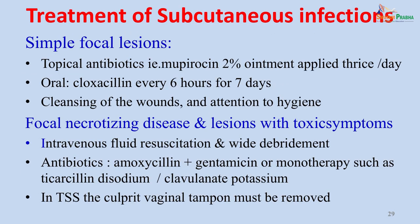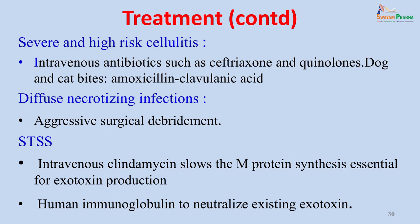The patient came into the category of simple focal lesions. Topical antibiotic — mupirocin 2% ointment — was applied thrice daily; oral cloxacillin every 6 hours was given for 7 days; and wound cleaning with attention to hygiene was addressed. For focal necrotizing disease or lesions with toxic symptoms, treatment would include intravenous fluid resuscitation, combination antibiotics such as amoxicillin and gentamicin or monotherapy with ticarcillin-clavulanic acid, and debridement of the necrotizing lesion. In toxic shock syndrome, the culprit vaginal tampon must be removed, and for severe cellulitis, intravenous antibiotics such as ceftriaxone and quinolones are important. For dog and cat bites, amoxicillin-clavulanic acid is adequate; diffuse necrotizing infections require aggressive surgical debridement, and IV clindamycin slows M-protein synthesis to reduce exotoxin production. Human immunoglobulins help neutralize existing exotoxin.